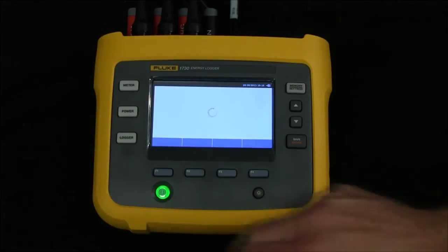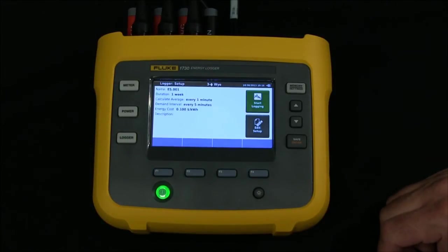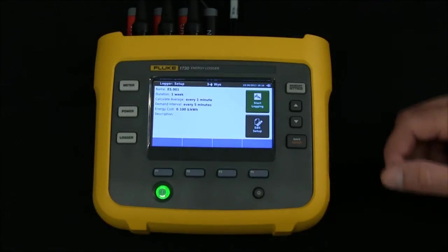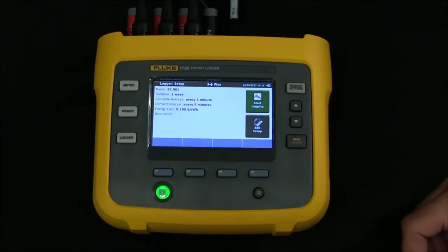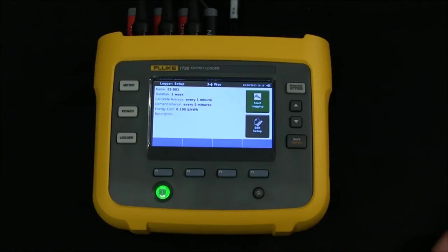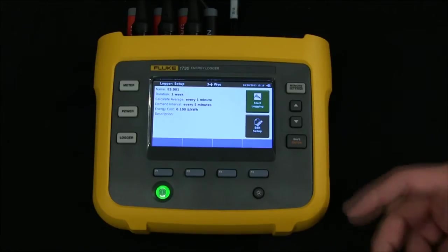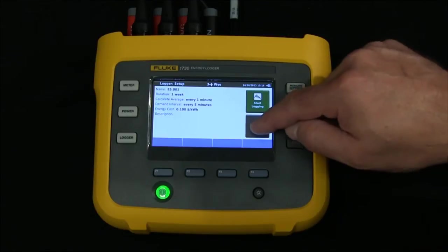So I'll go into logger, and I've got a couple options as far as how long I want it to run and what averaging interval I want to use along with my demand interval. If I want to make changes to this, I simply hit edit setup.